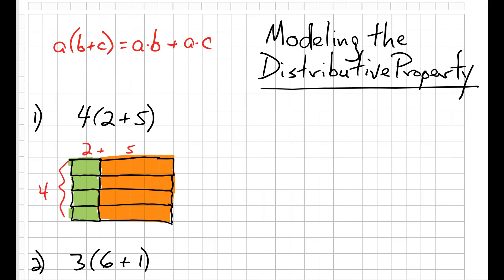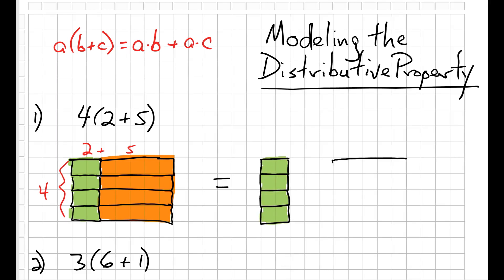So now I want to model the right side of my distributive property equation. And I'm going to do it like this by breaking apart my green blocks and my orange blocks. So you can see that now I have 4 two blocks added to 4 five blocks, which is just 4 times 2 plus 4 times 5.